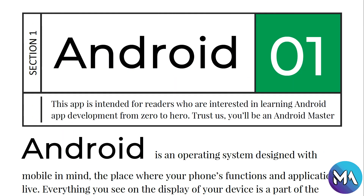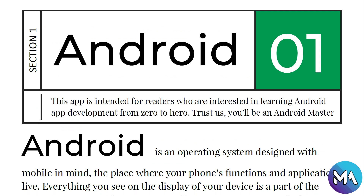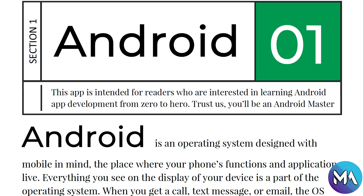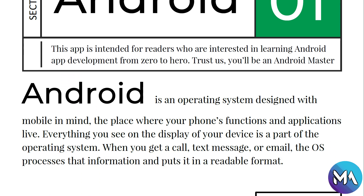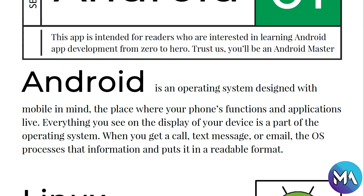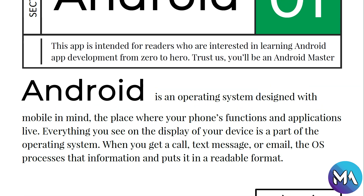This course is intended for learners who are interested in learning Android app development from zero — trust us, you will become an Android master. So, what is Android? Android is an operating system designed with mobile in mind — it is where your phone's functions and applications live. Everything you see on the display of your device is part of the operating system. When you get a call, text message, or email, the OS processes that information and puts it in a readable format.